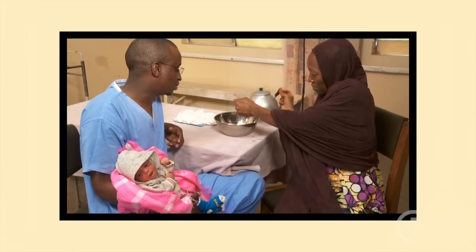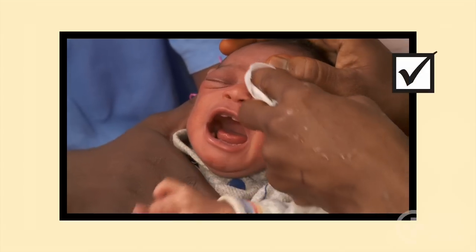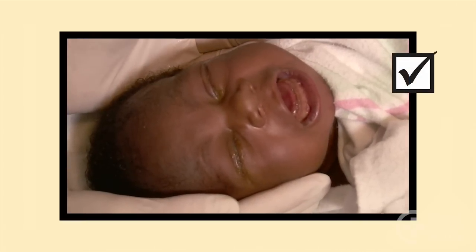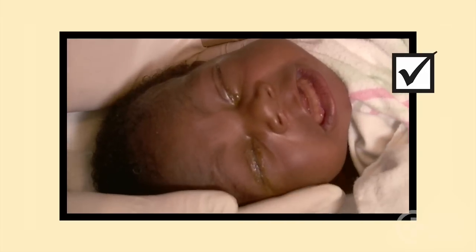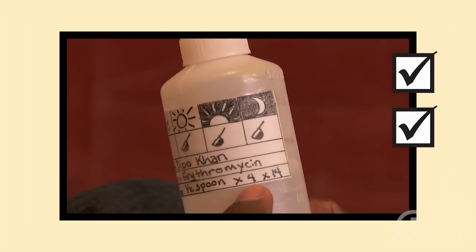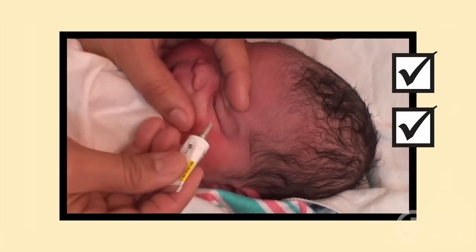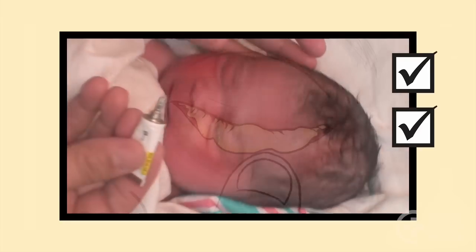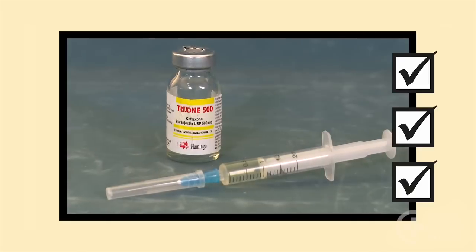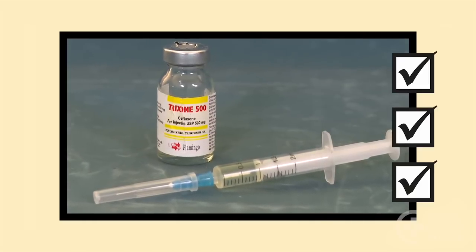Remember: a mild eye infection is cared for by cleaning the eyes. If the infection is moderate or the mild infection persists after four days, treat with an antibiotic by mouth and eye ointment. A baby with a serious eye infection has swollen eyelids and thick pus drainage — give ceftriaxone and refer urgently.